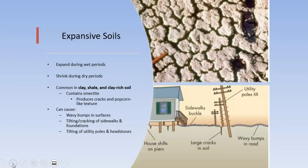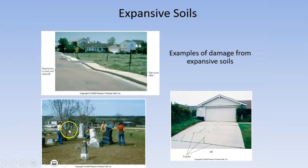Expansive soils are clay-rich soils that absorb lots of water when it rains, so they expand, and when they dry out they shrink. We have an example in northern Arizona. This changing land surface obviously affects structures similarly to other types of subsidence. Just like permafrost, it's not dramatic but it causes enough damage that over time it needs to be repaired.